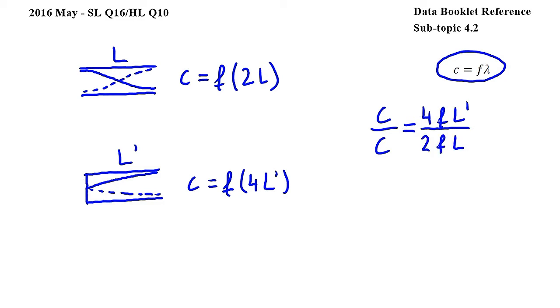We can simplify on the left side to get 1 over 1, and on the right side we get 2L' over 1L.